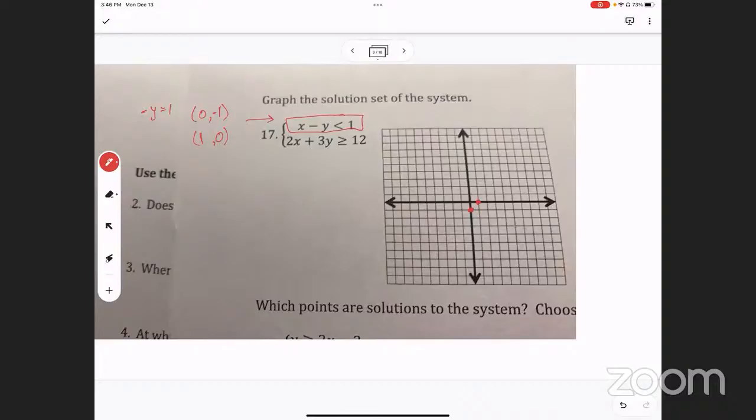And so you just have to connect them. You can see that the slope is one now, up one over one, and you know that it's a dotted line. So do that and then it goes down, whoops, down one over one.